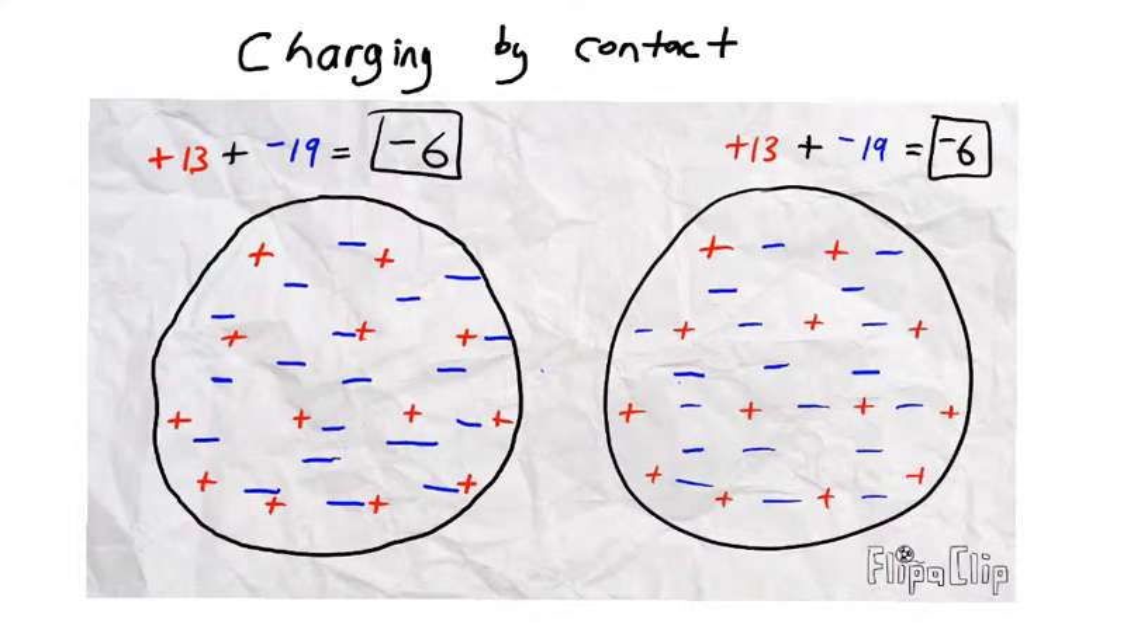If we have some object that's already charged, we can charge up a second object by using that first one. Now charges will try to repel from like charges, and so if we give them extra space to repel into, they can flow from one object to another. So here on the left we have this object with a bunch of extra negative charges, and the one on the right has even numbers of positive and negative charges.